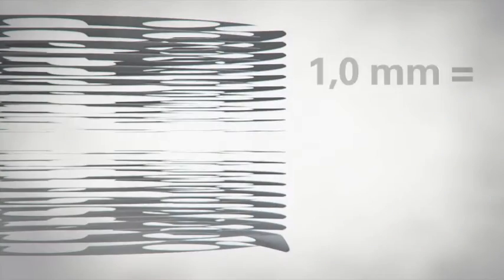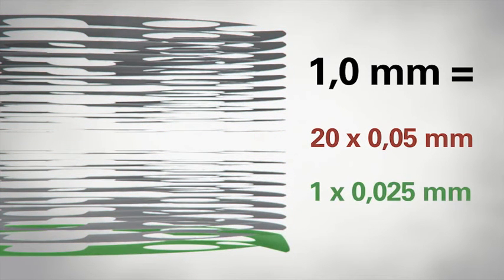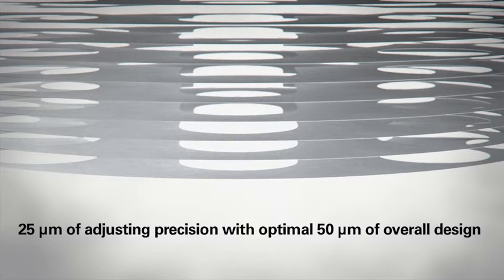A thickness of one millimeter is composed of 20 by 50 micron foils plus a 25 micron high-precision foil. Laminum HP one means 25 microns of adjusting precision with optimal 50 microns of overall design.